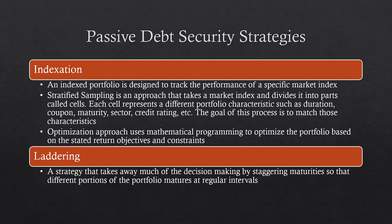Passive debt strategies include indexation, where an index portfolio is designed to track the performance of a specific market index. Stratified sampling takes a market index and divides it into cells, each representing different portfolio characteristics such as duration, coupon, maturity, sector, and credit rating, with the goal of matching those characteristics. The optimization approach uses mathematical programming to optimize the portfolio based on stated return objectives and constraints. Laddering staggers maturities so that different portions of the portfolio mature at regular intervals — often used for clients with a GIC portfolio, and it works for bonds as well.